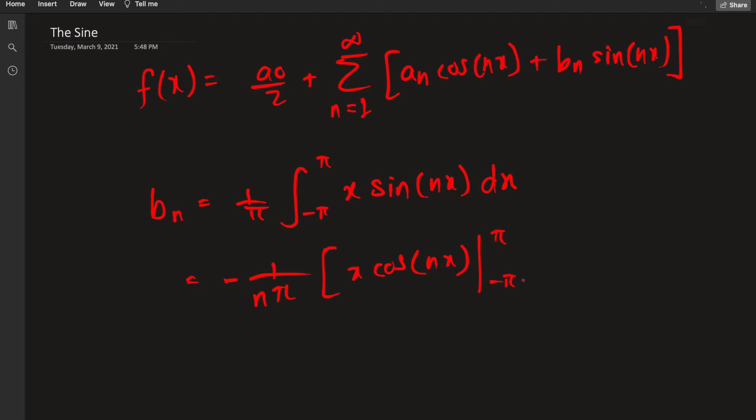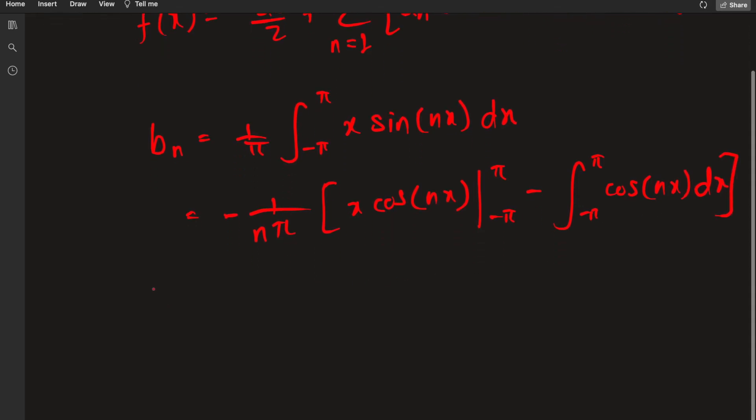Evaluated at π and negative π, minus integral from negative π to π cosine of nx dx. If you have trouble understanding, you can pause the video and do it on a piece of paper. Negative 1 over nπ, for this term we have (-1)ⁿ for the cosine at π, and then π, and this negative negative will be a positive, so it's 2π.